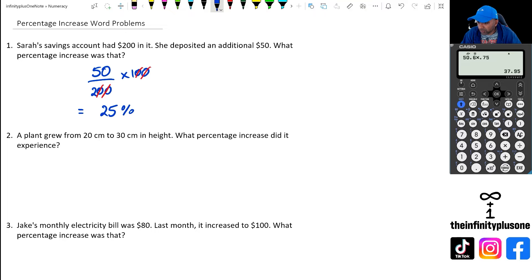Now to do this in the calculator, of course, we're simply going to go 50 divided by 200. And as you can see, that's going to give us a quarter. And then if we multiply that by 100, that's going to give us 25%.